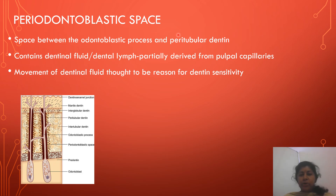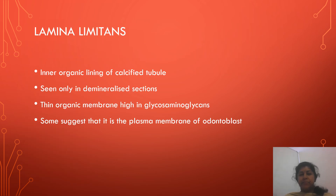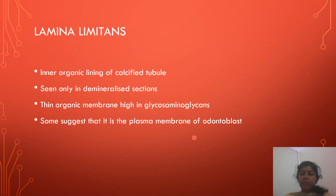Next is the periodontoblastic space. This is the space between the odontoblastic process and peritubular dentine, which contains dentinal fluid or dental lymph partially derived from pulpal capillaries. Movement of dentinal fluid is thought to be the reason for dentine sensitivity. Next is the lamina limitans — the inner organic lining of the calcified tubule, seen only in demineralized sections. It is a thin organic membrane high in glycosaminoglycans, and some suggest it is the plasma membrane of the odontoblast.